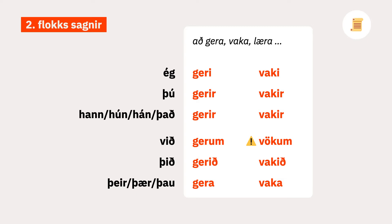Class 2 verbs follow the pattern shown here. As you can see, the singular forms all have an ending containing 'e'. The plural endings are the same as for class 1 verbs.